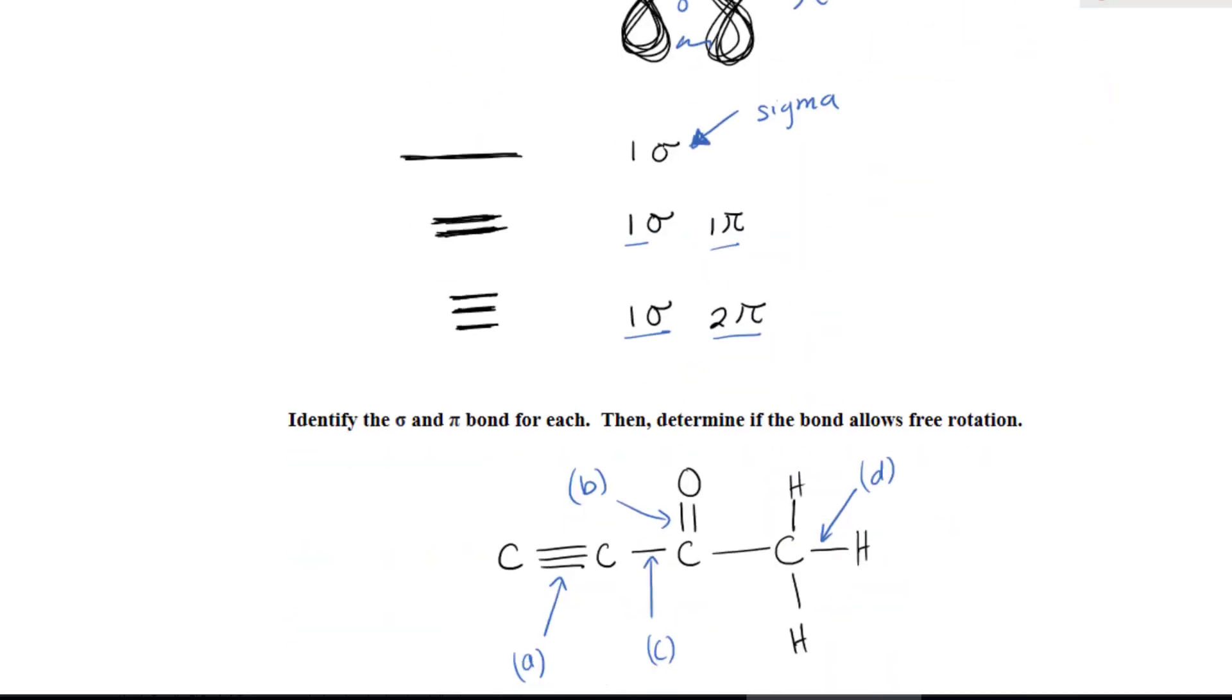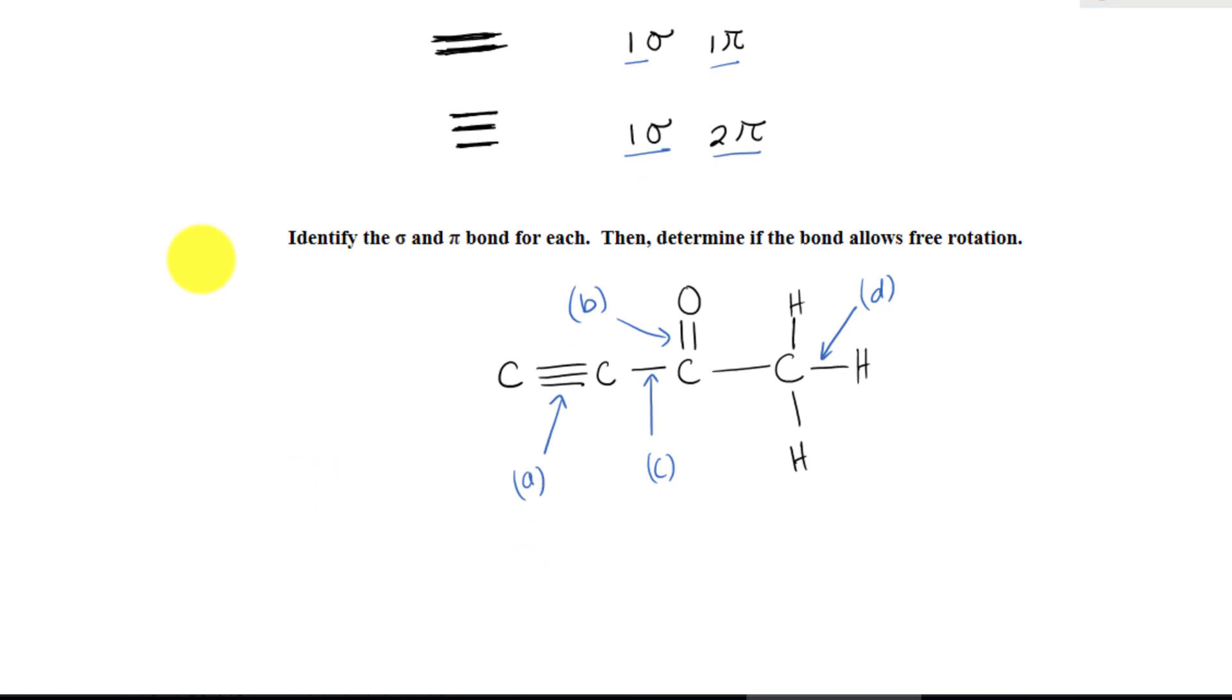Now let's apply this concept. For example, we have this structure right here, and I label A, B, C, and D. Sometimes I will ask you to identify the number of pi bond and sigma bond in each of those particular bonds. I ask you specifically, identify the number of sigma and pi bond in this particular bond right here. And also, determine if the bonds allow free rotation.